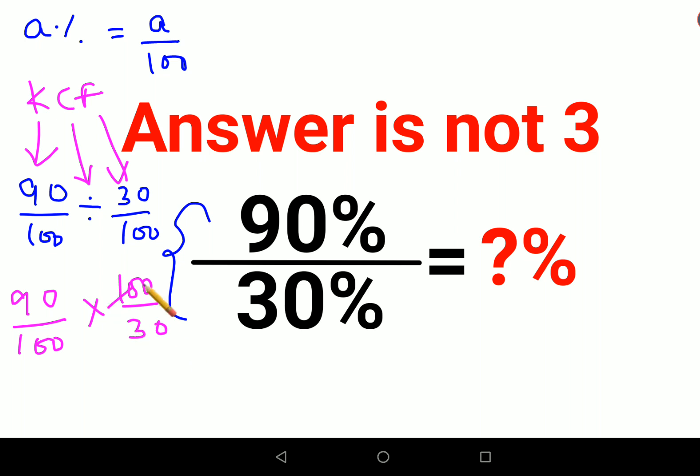So this is cancelling — the 100s cancel and the 30 and 90 simplify as 3s, giving us 3. Unfortunately the answer is not simply 3.